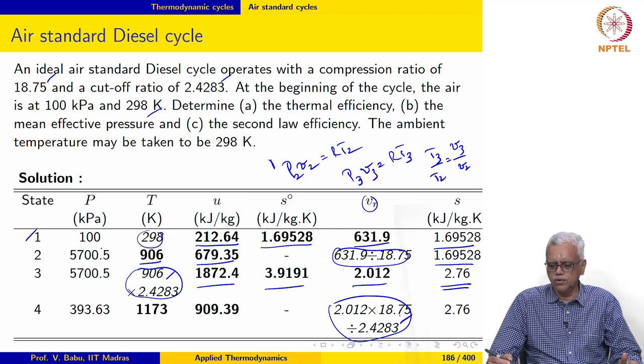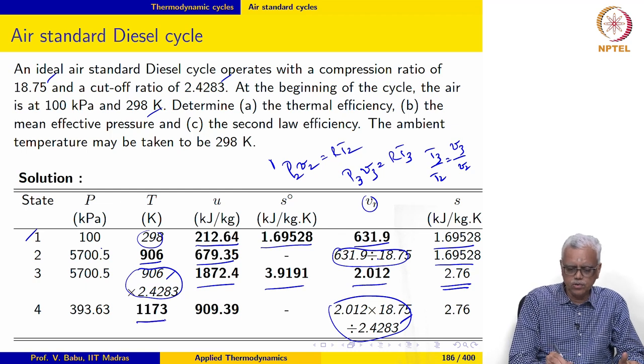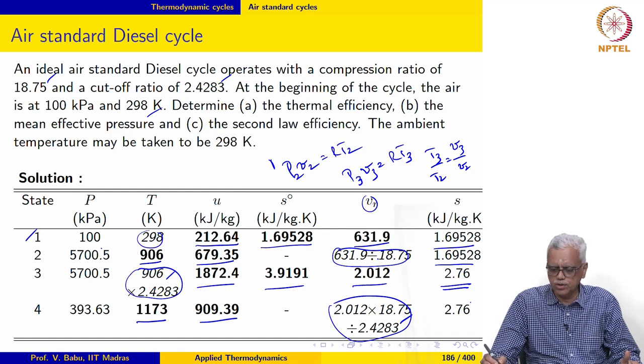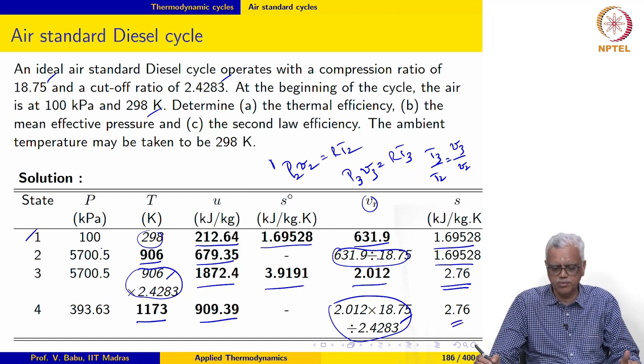With this value for Vr, we can then go to the table to retrieve T and U. S0 is not required because this is an isentropic process, so the entropy remains constant.